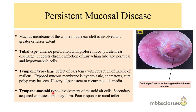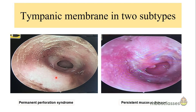Patients with tympanomastoid type don't respond to aural toileting and sometimes we may have to do a cortical mastoidectomy. Looking at the otoscopic examination, we can see that the middle ear mucosa is congested, edematous, reddish in color and has a wet look. Comparing the two subtypes: in permanent perforation syndrome it appears as a silent disease — perforation is dry, middle ear mucosa is gray, not active. In mucosal disease, it is inflamed, edematous, and there is discharge.